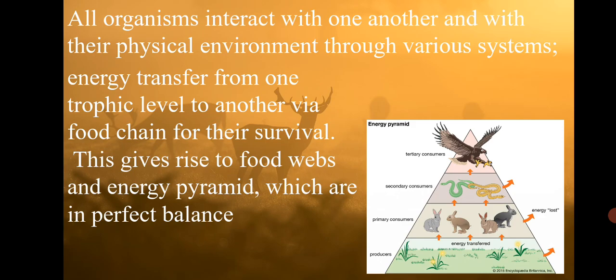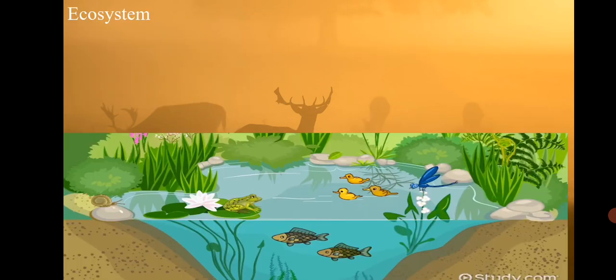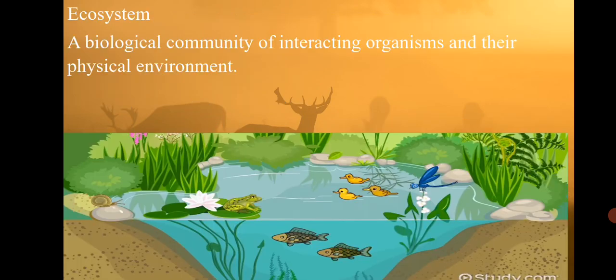This gives rise to the food web and energy pyramid, which are in perfect balance. An ecosystem is the interaction of organisms and their interaction with the physical environment.